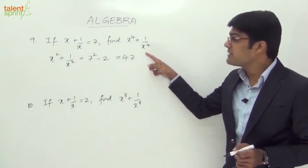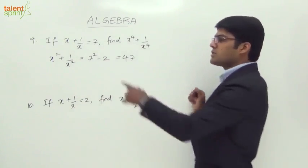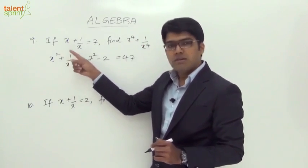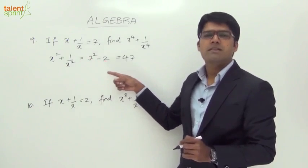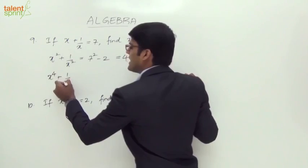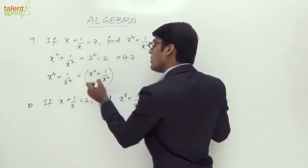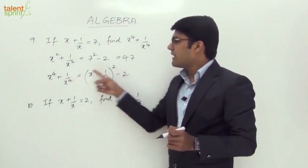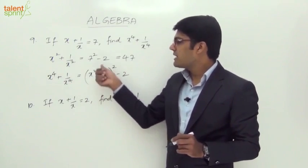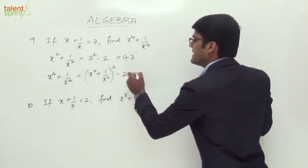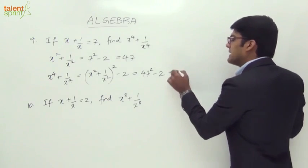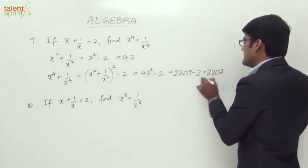Our requirement is x⁴ + 1/x⁴, which is the square of x² + 1/x². Squaring both sides: (x² + 1/x²)² gives x⁴ + 1/x⁴ + 2·x²·(1/x²), and x² and 1/x² cancel, so x⁴ + 1/x⁴ = (x² + 1/x²)² - 2 = 47² - 2. Now 47² = (50 - 3)² = 2500 - 300 + 9 = 2209, so 2209 - 2 = 2207.